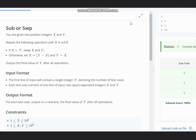Hello everyone, welcome to the channel. Here we're discussing the problem on CodeChef that is Sub or Swap. You are given two positive integers X and Y. Repeat the following operations until X is not zero: if X is greater than Y, swap X and Y; otherwise, set X equal to Y minus X and Y equal to X.